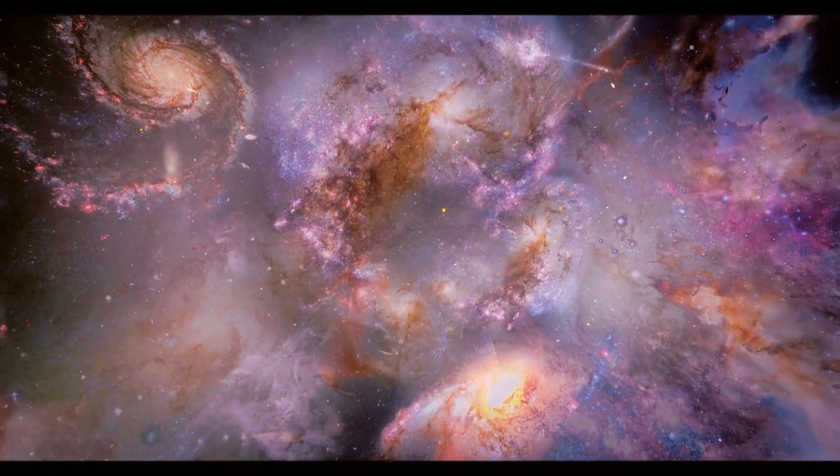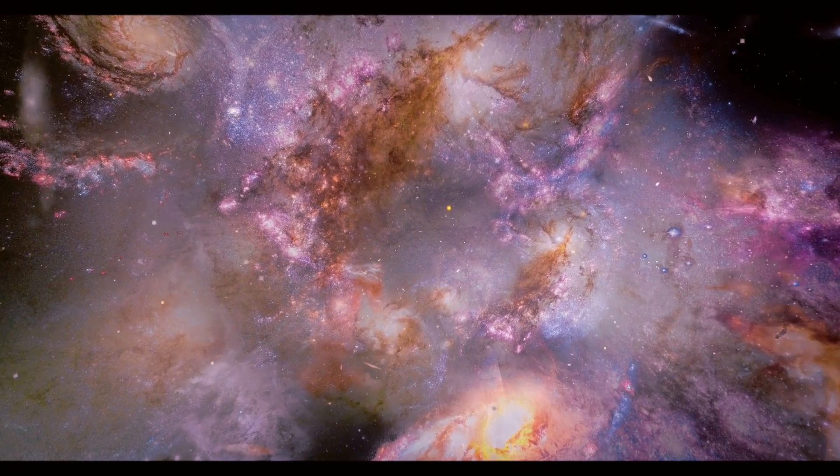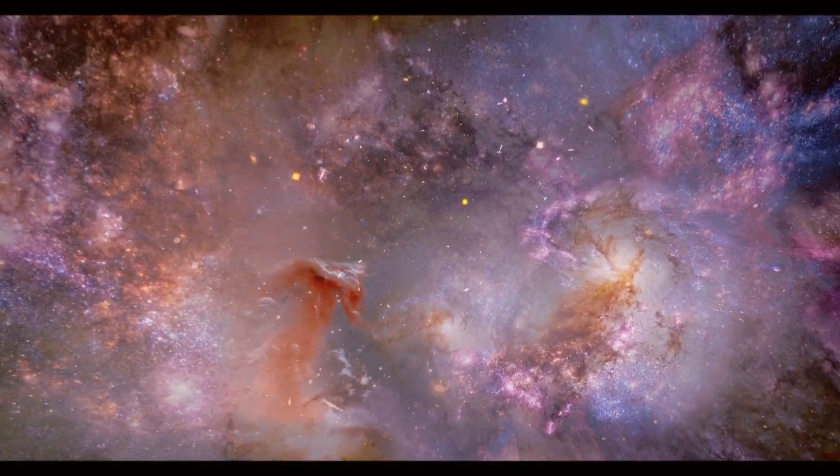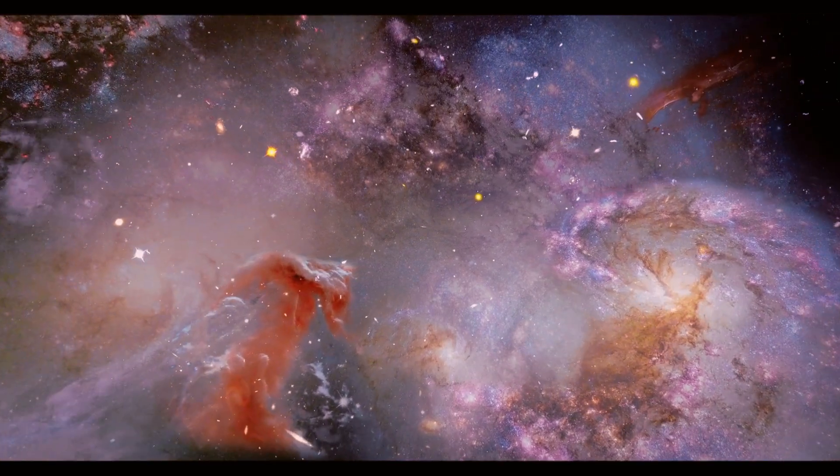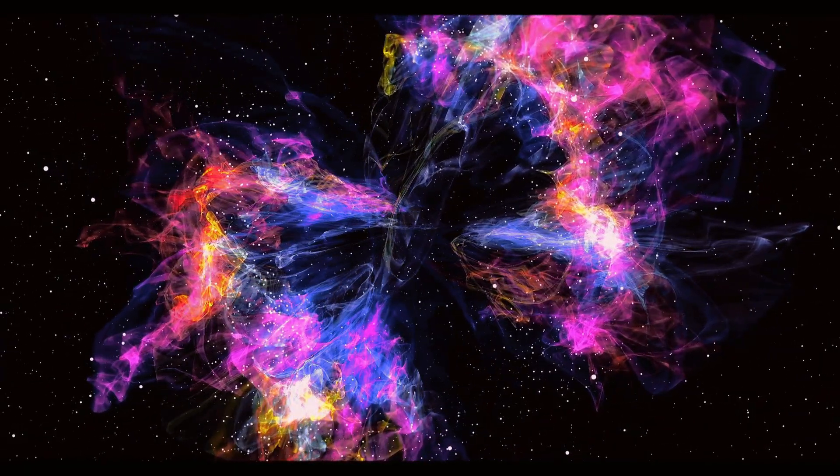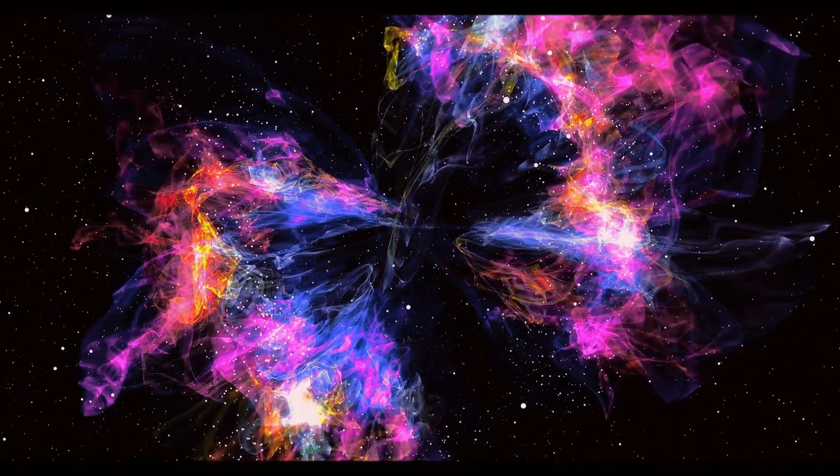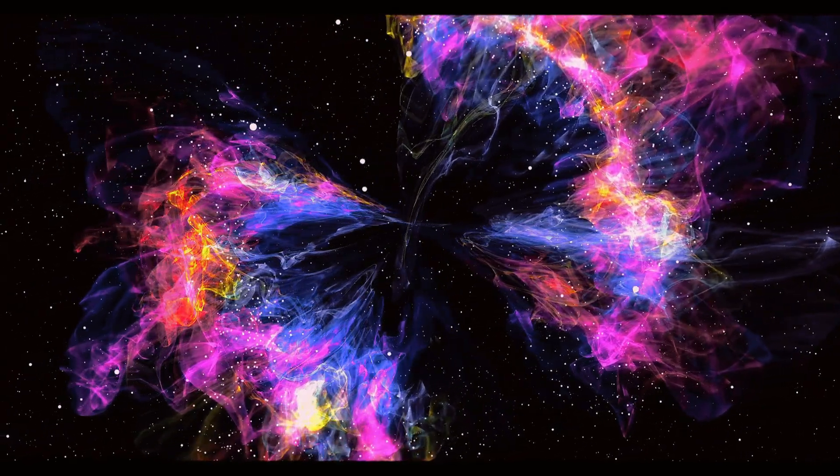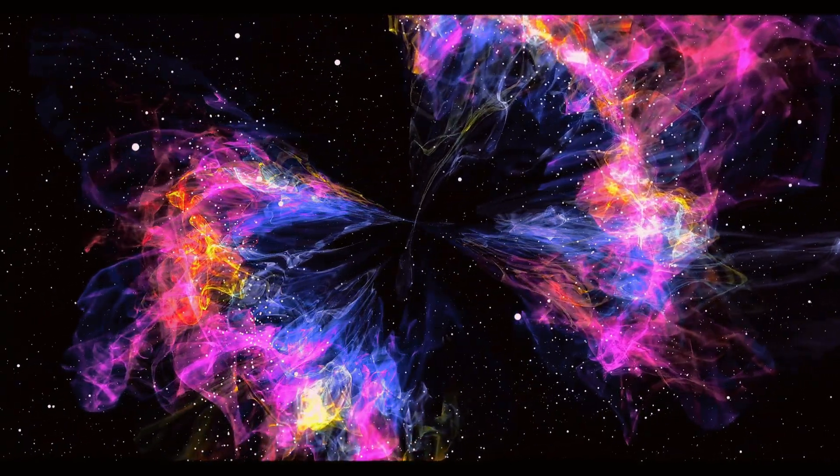Another type of galaxy is the elliptical galaxy. Unlike spiral galaxies, elliptical galaxies do not have a defined shape or structure. They are generally more massive and contain older stars. Elliptical galaxies can vary from small dwarf galaxies to massive giants that are thousands of times larger than our Milky Way.